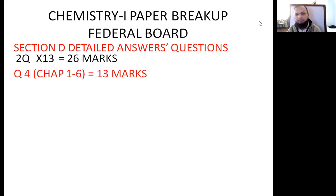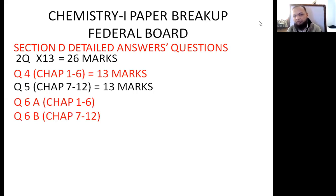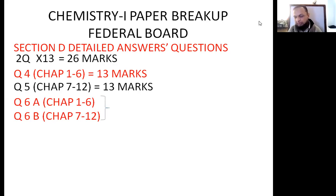Question number four will be from chapter number one to chapter number six, that is the first half of your book, and it will be of thirteen marks. Question number five will be from chapter number seven to chapter number twelve, with two parts — part A from chapters one to six, and part B from chapters seven to twelve. These two parts combine to give you thirteen marks.